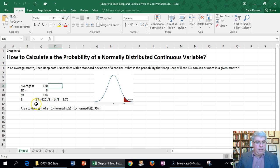So what we do is we use our Z formula for calculating the Z, which is X minus X bar divided by sigma, which is 134 minus 120, and that gives us 14 cookies.